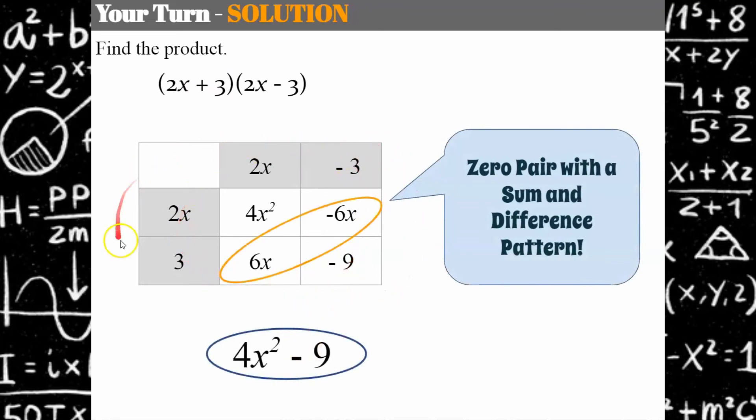But notice I did the table out to show you our zero pair. But 2X squared is 2X times 2X, which is 4X squared. 3 squared is 9, and I subtract for my sum and difference pattern.